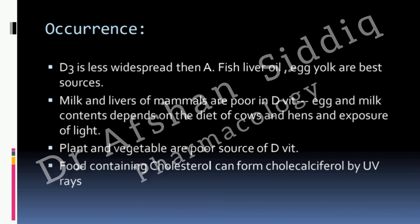Vitamin D is unique in the sense that it can be synthesized in the body when the body is exposed to sunlight. Therefore, some books and literature also term this vitamin as the "sunshine vitamin." It is also naturally available in food.